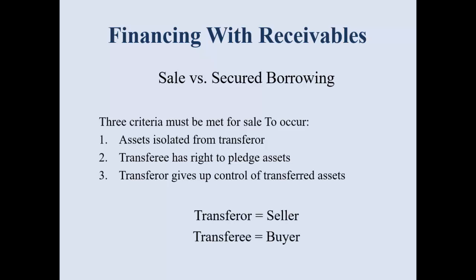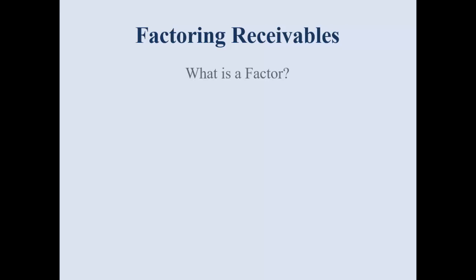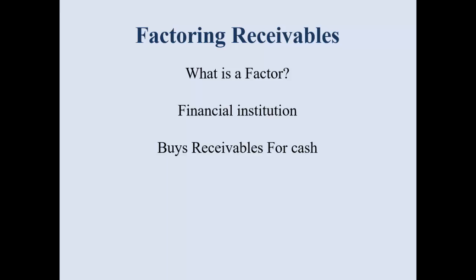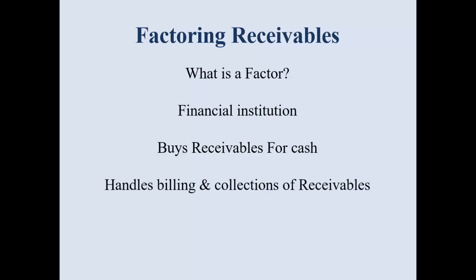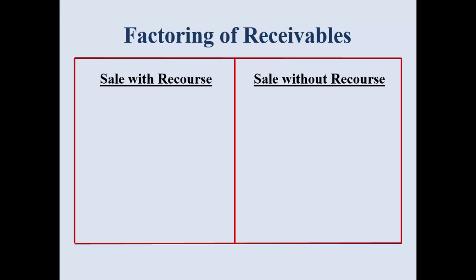The transferor is the seller and the transferee is the buyer. So when we talk about factoring receivables, when you hear the term factoring, we're thinking about those accounts receivable. A factor is going to be a bank, financial institution, or could be a collection agency. They're buying receivables for cash, and that factor then handles the billing and the collection of the receivables — but of course, they're going to charge you a fee.